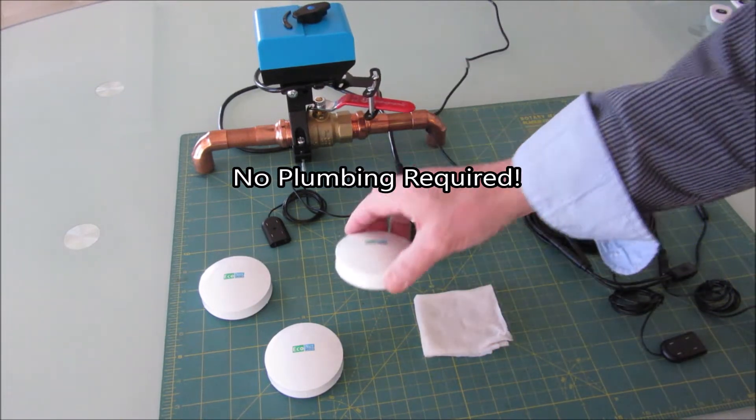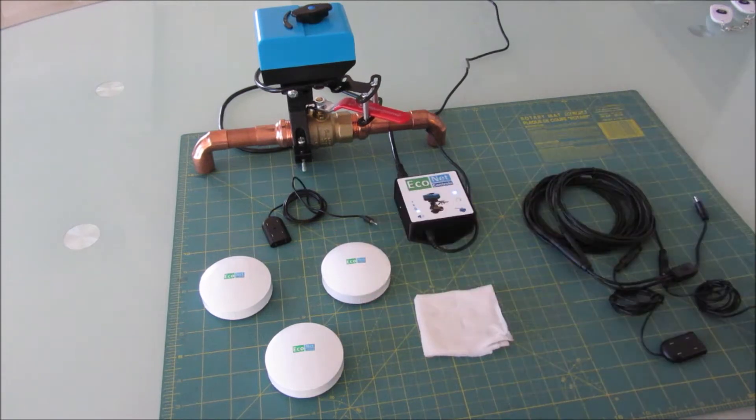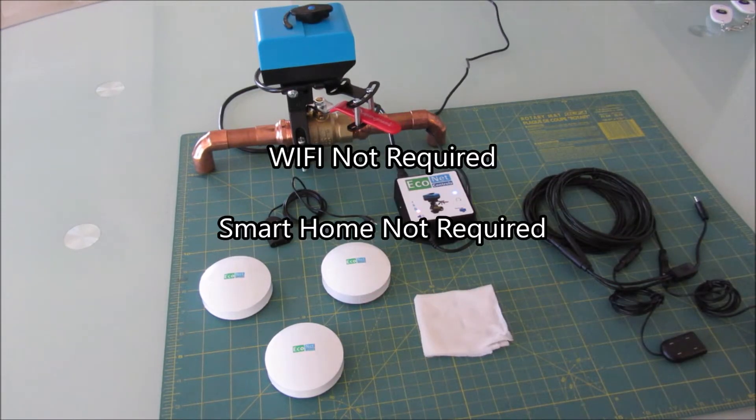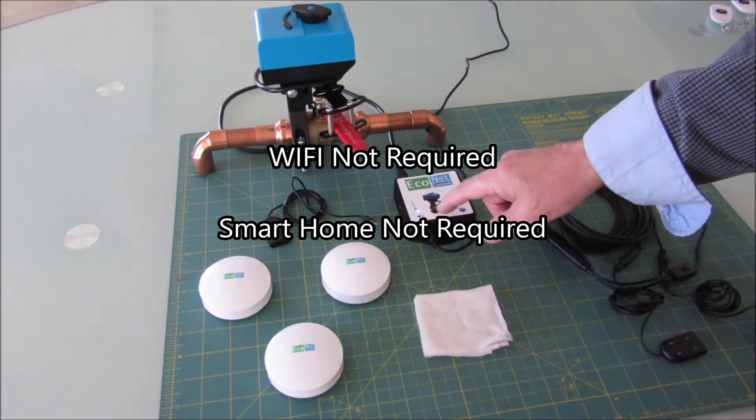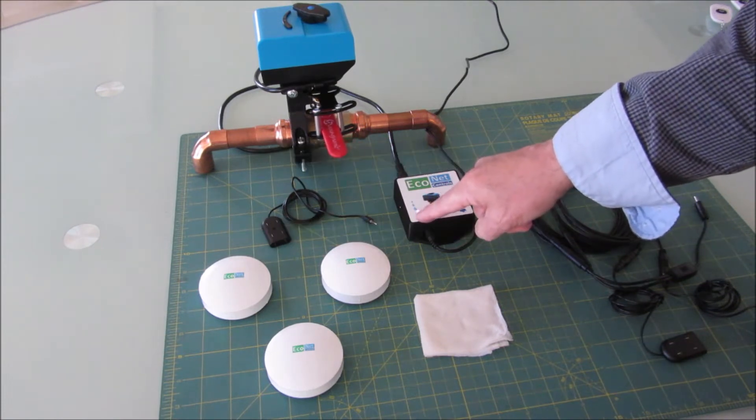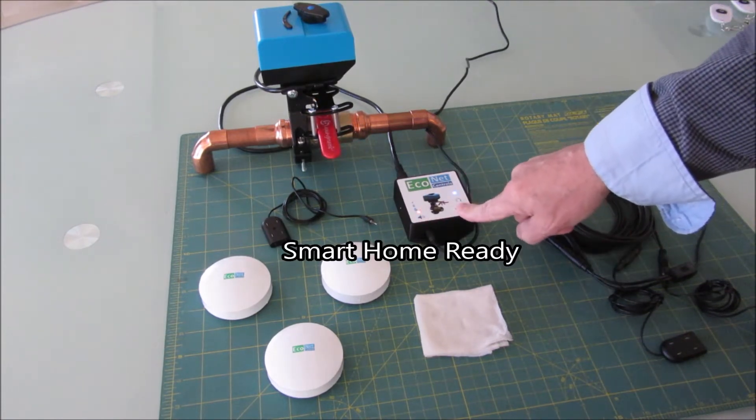The reason we do two cycles is to reduce the possibility of false positives. We reset the alarm by pushing the speaker button. Turn your water back on.